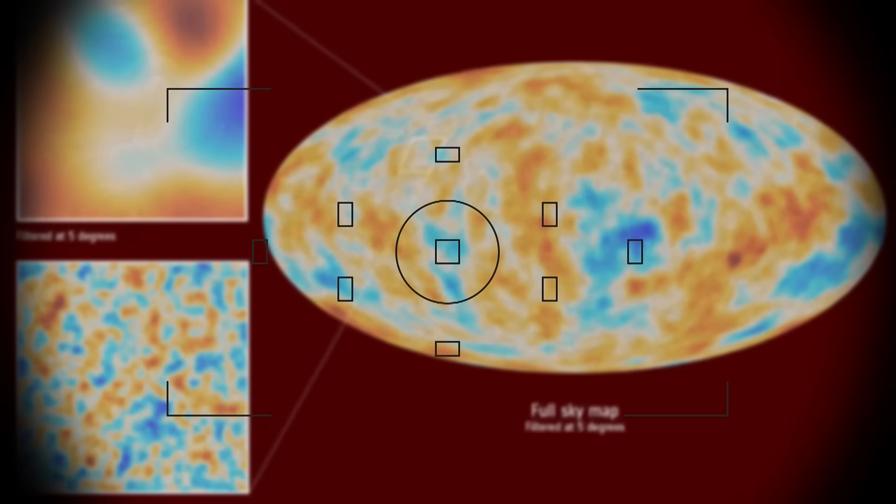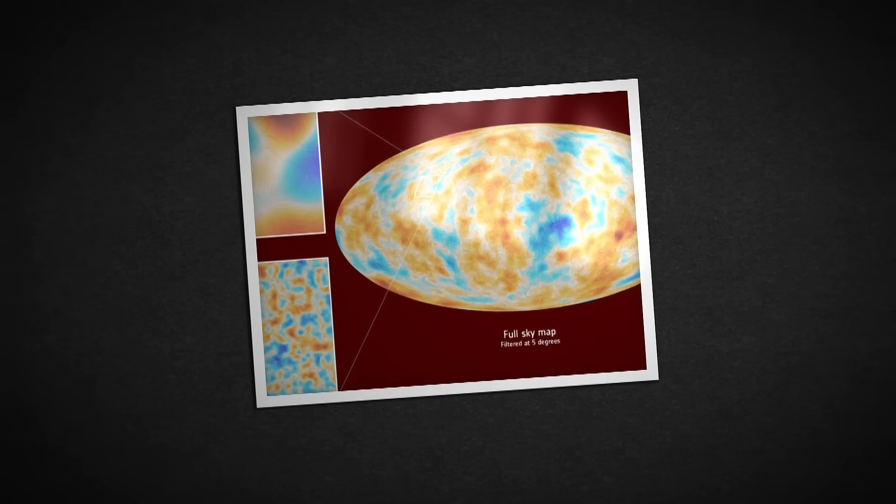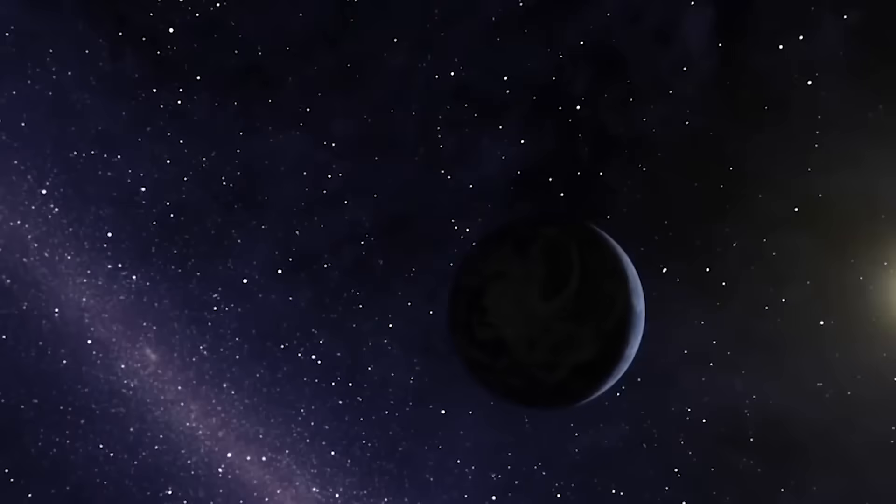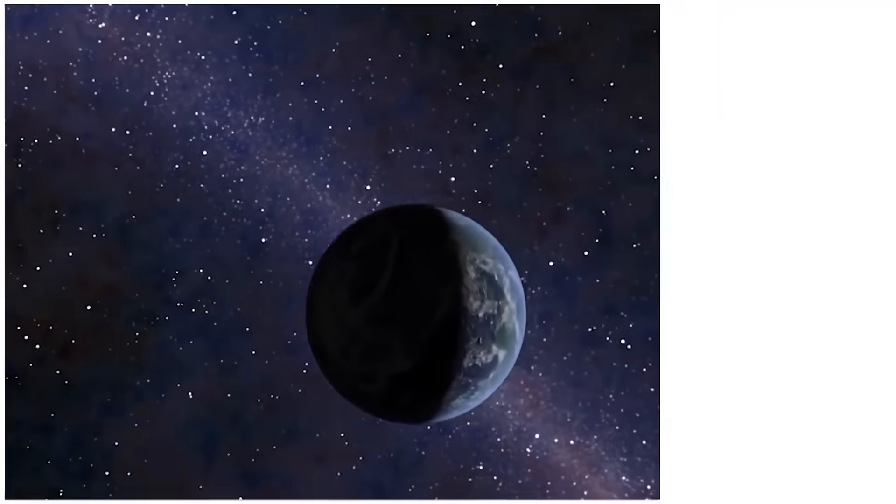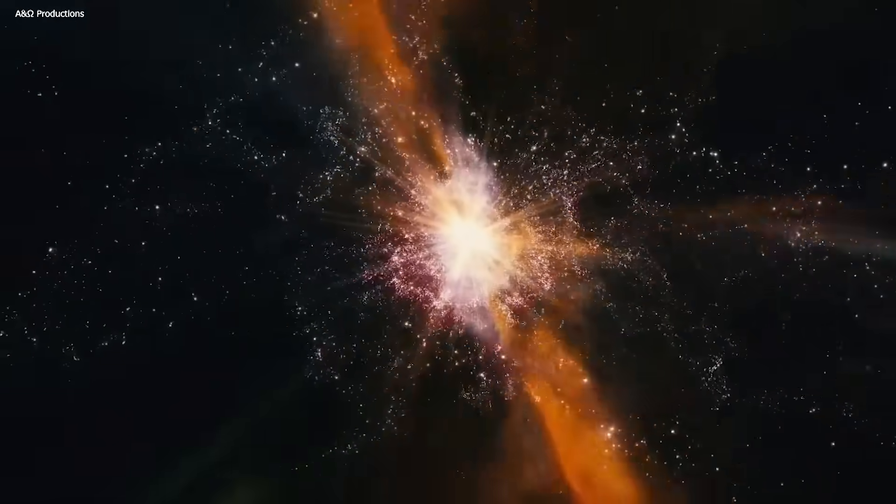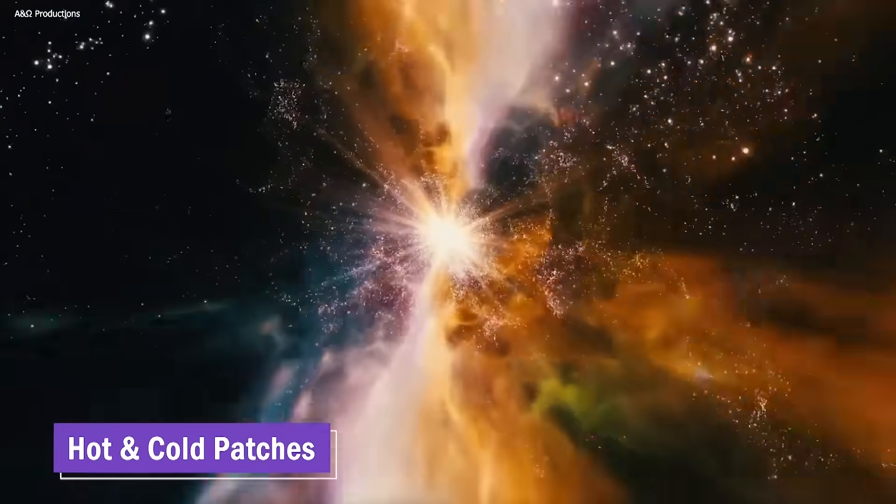The CMB is like a snapshot of the universe when it was just 380,000 years old. It provides us with a perfect record of what the universe looked like in its infancy. By studying the temperature variations in the CMB, we can learn a lot about the early universe. The CMB shows tiny hot and cold patches.